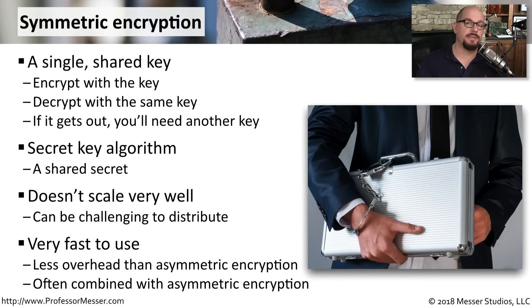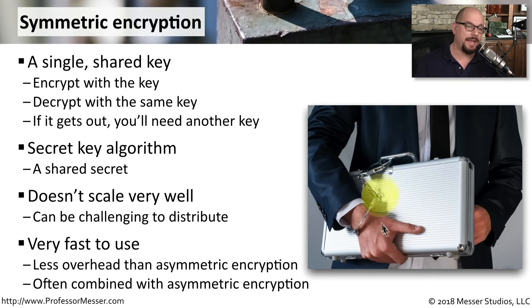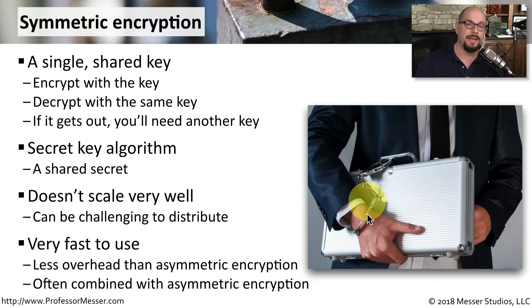Symmetric encryption is a relatively fast way to encrypt and decrypt data. It has relatively less overhead than using asymmetric encryption. But we often combine symmetric and asymmetric encryption together. For example, it's very common to encrypt a symmetric key using asymmetric encryption. Now you don't need somebody with a briefcase and handcuffs — you can simply send that key across a public medium. And since that symmetric key is encrypted using asymmetric encryption, even if somebody captured that data during the transfer, they would still have no idea what the symmetric key was.